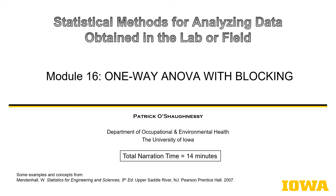Hello, this is Patrick O'Shaughnessy, and this is the 16th module in the series Statistical Methods for Analyzing Data Obtained in the Lab or Field. Here we'll be discussing a specialized form of the one-way ANOVA — or it could be considered a specialized form of the two-way ANOVA — in which the concept of blocking is applied.